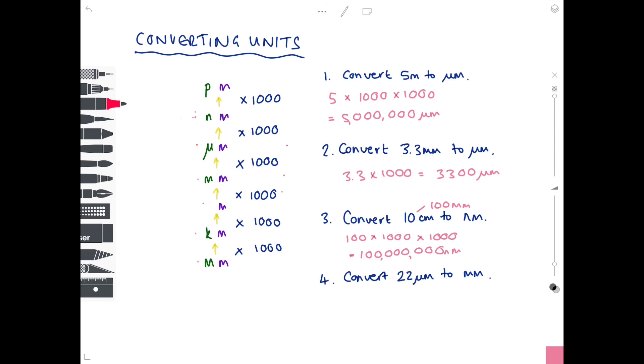And now we're going to go the other way. So we're converting 22 micrometers to millimeters. So this time we need to divide by a thousand. So 22 micrometers is 0.022 millimeters.